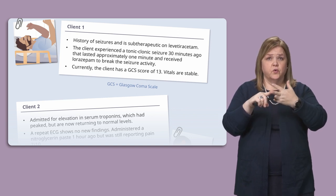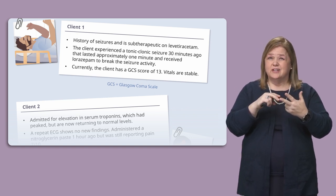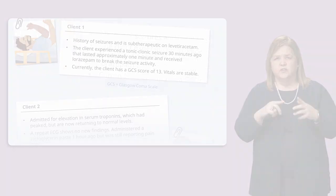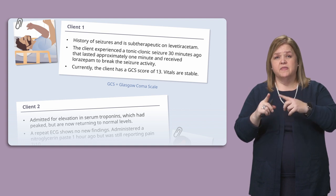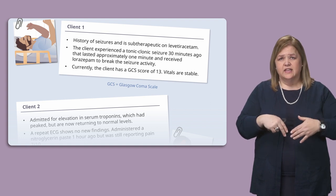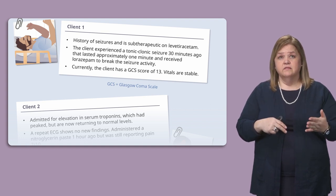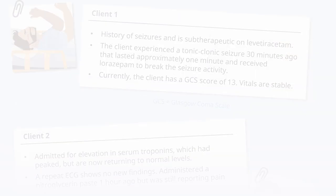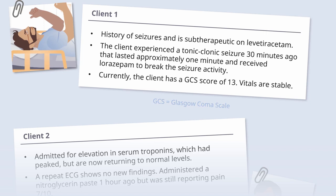Client one experienced a tonic-clonic seizure 30 minutes ago that lasted approximately one minute, and received lorazepam to break the seizure activity. Right now the client has a GCS of 13 and vitals are stable. So the seizure was 30 minutes ago, lorazepam was given during the seizure, and currently they're pretty stable with a GCS of 13.